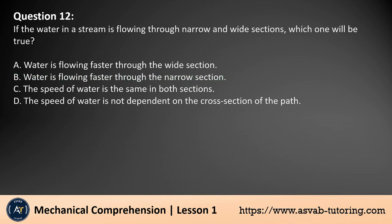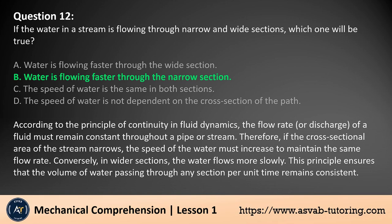Question 12. If the water in a stream is flowing through narrow and wide sections, which one will be true? A. Water is flowing faster through the wide section. B. Water is flowing faster through the narrow section. C. The speed of water is the same in both sections. D. The speed of water is not dependent on the cross-section of the path. The answer is B. According to the principle of continuity in fluid dynamics, the flow rate, or discharge, of a fluid must remain constant throughout a pipe or stream. Therefore, if the cross-sectional area of the stream narrows, the speed of the water must increase to maintain the same flow rate. Conversely, in wider sections, the water flows more slowly. This principle ensures that the volume of water passing through any section per unit time remains consistent.